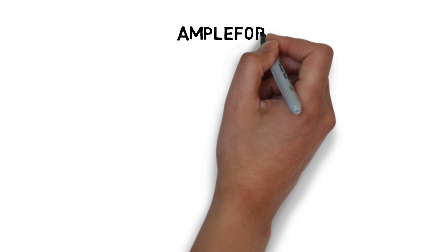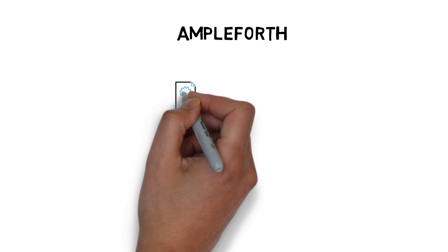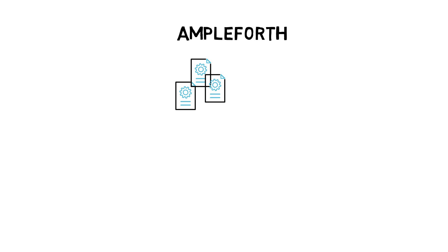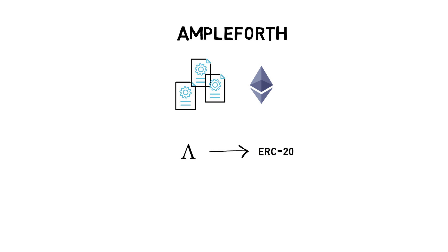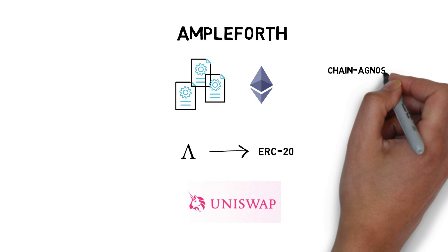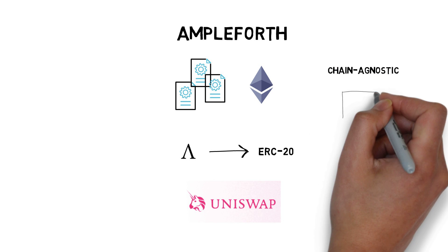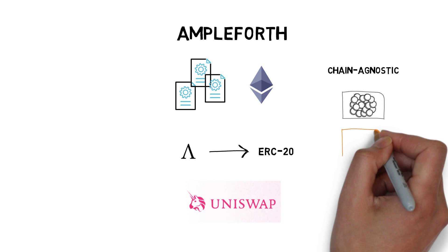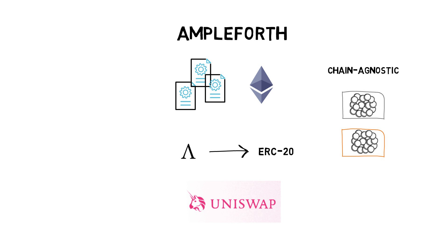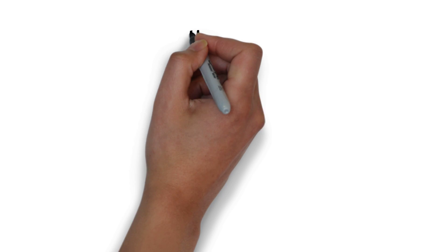The Ampleforth protocol is implemented as a set of smart contracts deployed to the Ethereum blockchain. The Ample token implements the ERC-20 interface and can be easily exchanged on decentralized exchanges such as Uniswap. According to the documentation, the protocol is chain agnostic and Ample tokens can exist simultaneously on multiple platforms, so there is also a chance of seeing Ample tokens on other blockchains in the future.